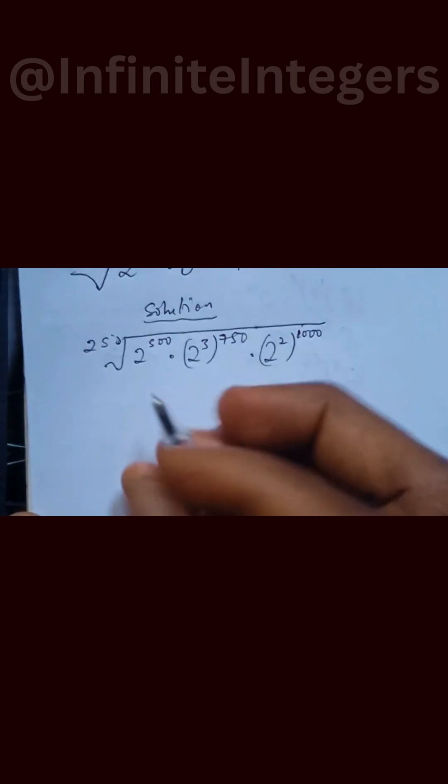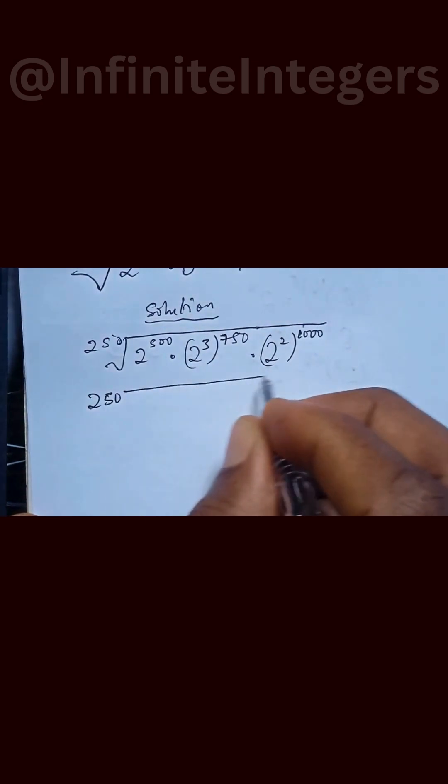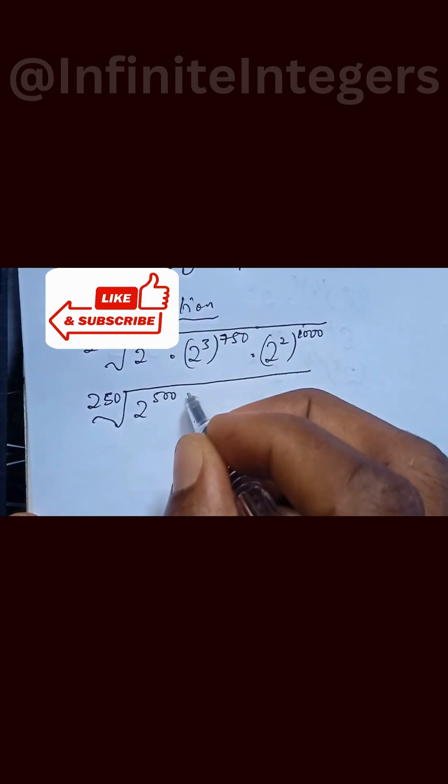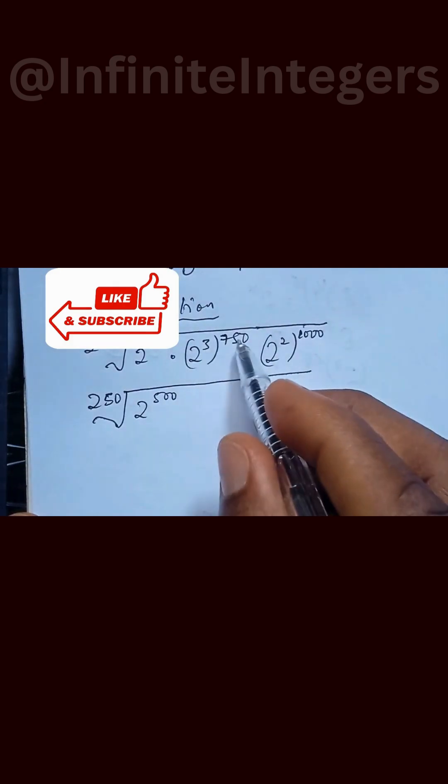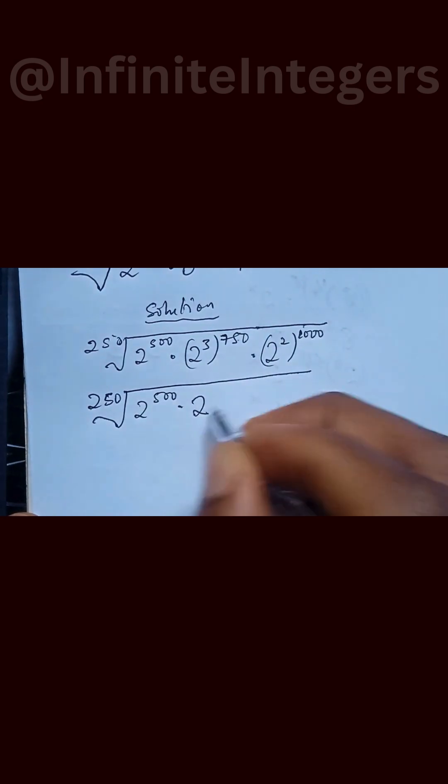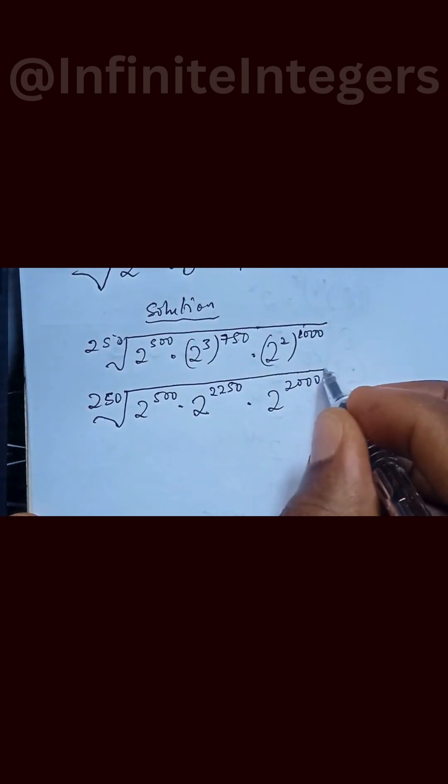And that can be written as 250 roots of 2 to the power of 500, then these 3 multiply by this we have multiply by 2 to the power of 2250, multiply by 2 to the power of 2000.